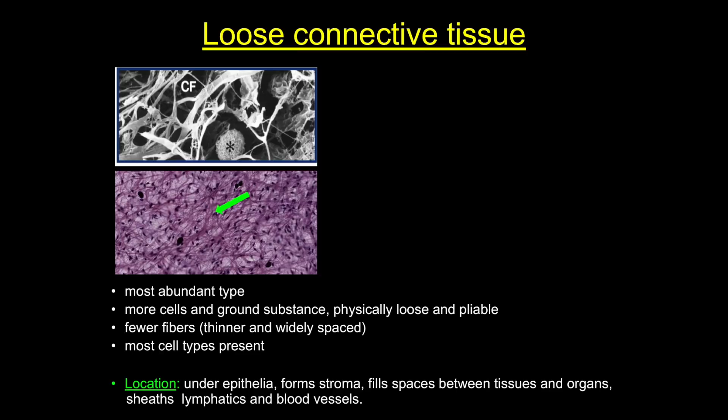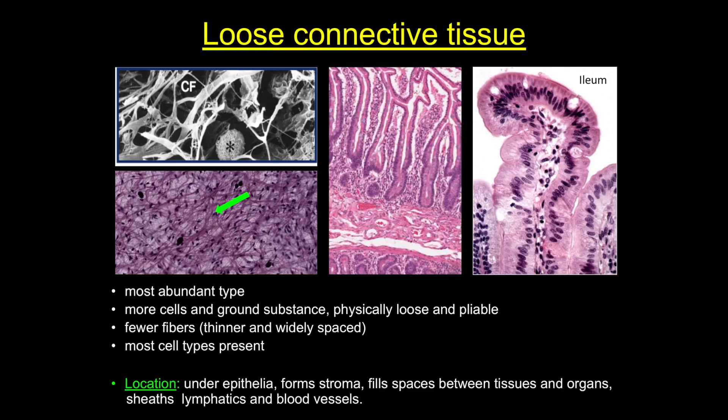Loose connective tissue is located under all epithelia. It sheaths blood vessels and fills the spaces between organs. Here are a couple of examples from the digestive system — the lamina propria of the duodenum and then the ileum. Notice that in both these examples it's very hard to see actual fibers, but you can obviously see cells.